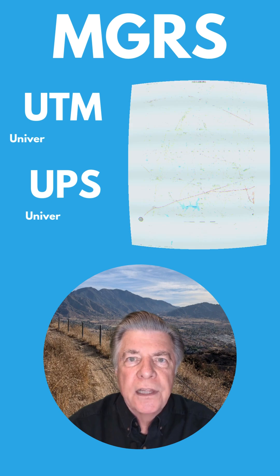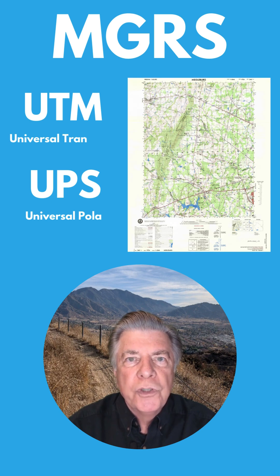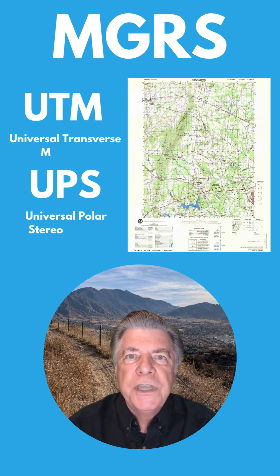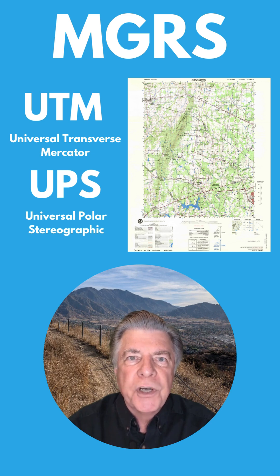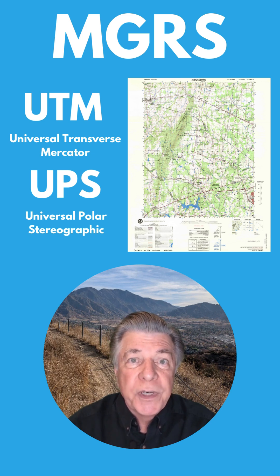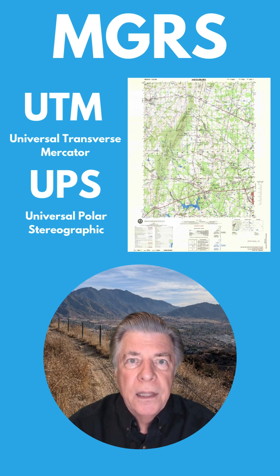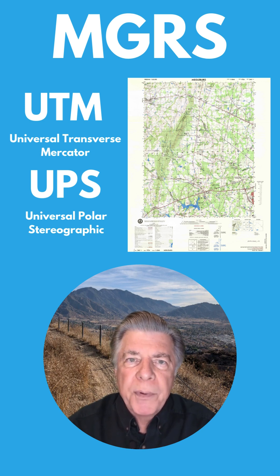The military addressed this after World War II by adopting UTM and UPS, creating the Military Grid Reference System. This furnished military map readers with a system of squares, like city streets and blocks, that can be read. The dimensions vary based on the scale of the map, but three properties are common to all military grid systems.